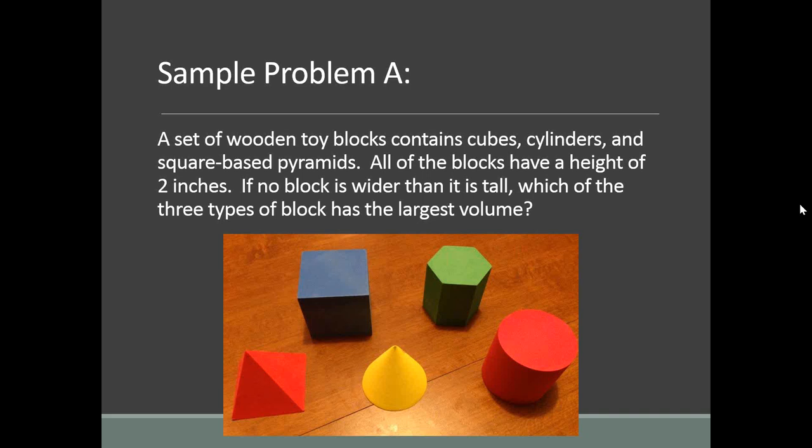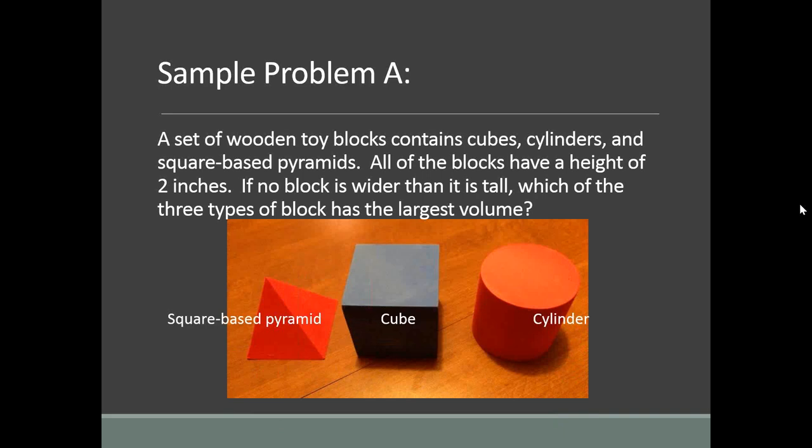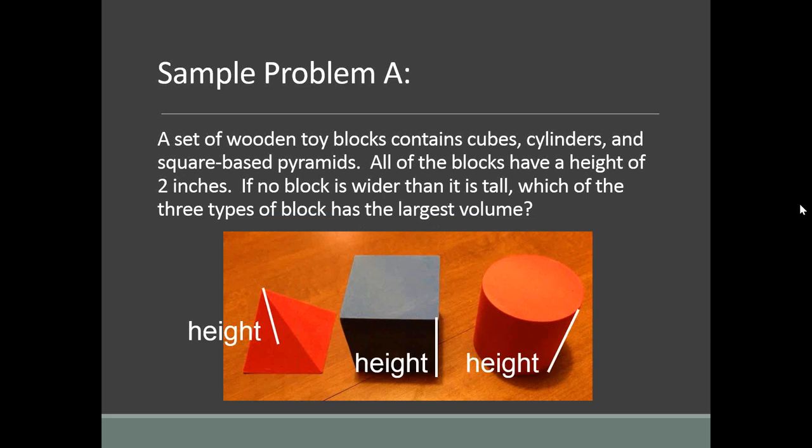Sample problem A: a set of wooden toy blocks contains cubes, cylinders, and square-based pyramids. All blocks have a height of 2 inches. If no block is wider than it is tall, which of the three types of blocks has the largest volume? I would start by bringing out the foam shapes, having students touch them, and reviewing vocabulary. This problem mentions height — where would height be on this cone? We'd select the shapes from the problem — the square-based pyramid, cube, and cylinder — and have students point out height on each, noting that height on the square-based pyramid is straight up the middle, unlike the cylinder and cube.